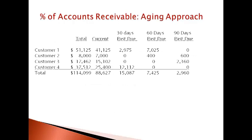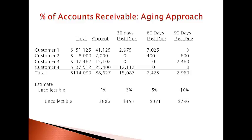A summary aging looks similar to this report. Amounts due are sorted according to how many days past due. Then the accountant assigns a percent probability of not collecting to each category. The longer the account is past due, the higher the percent probability of non-collection. The percent is multiplied by the balance in each category to give the total estimate of the uncollectable amount. The estimate of what will not be collected is the total that must be in the allowance account and reduces accounts receivable.